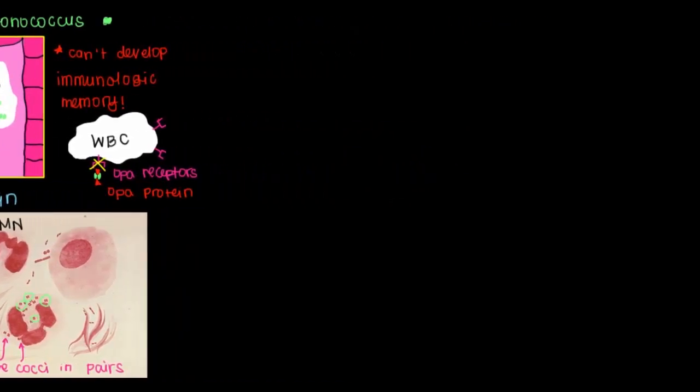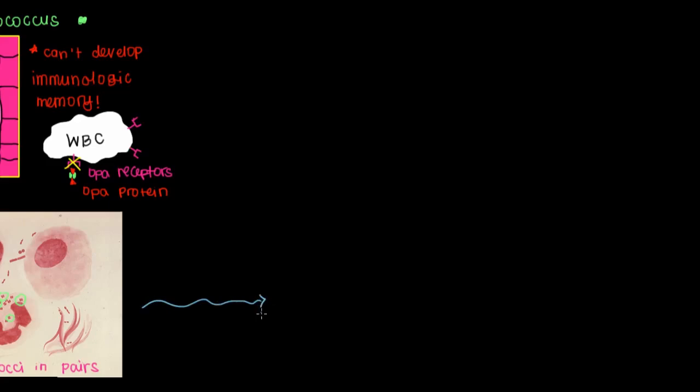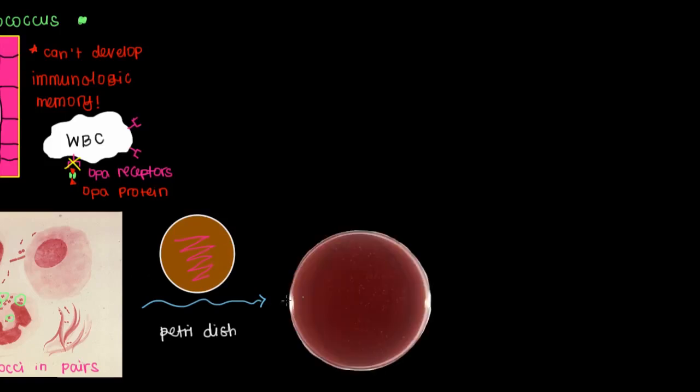But another step we can take is to take the swab and smear it on this petri dish. What that allows us to do is we'll put our swab here and we'll smear the sample we got from the patient, and we'll let it grow over a few days. This is a petri dish that we've grown some bacteria on, so we refer to this process as a culture. We've cultured the swab or the specimen that we took.